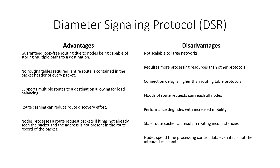The advantages of Diameter Signaling Protocol include guaranteed loop-free routing due to nodes being capable of storing multiple paths to a destination. No routing tables are required, as the entire route is contained within the packet header of every packet. It supports multiple routes to a destination allowing for load balancing, and route caching can reduce route discovery effort. Nodes process a route request packet if they have not already seen the packet and it is not present in the route record.